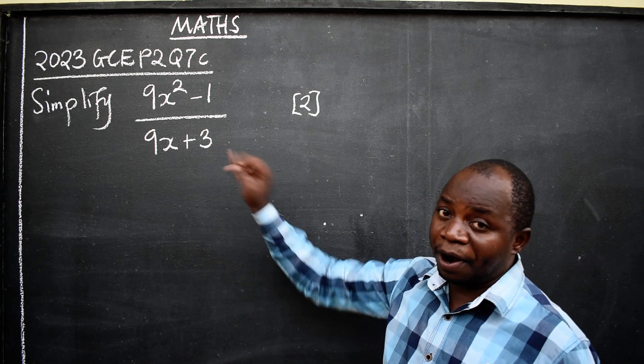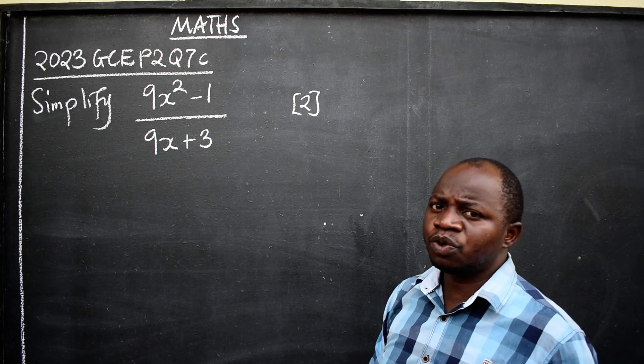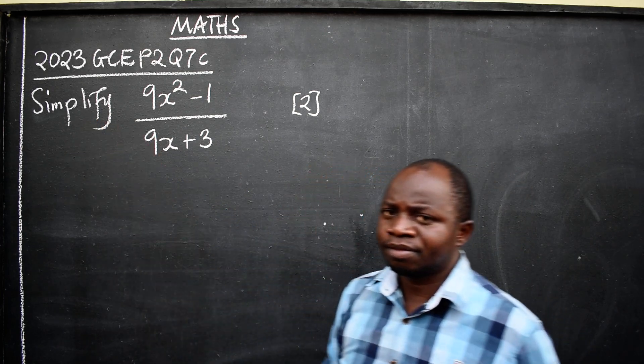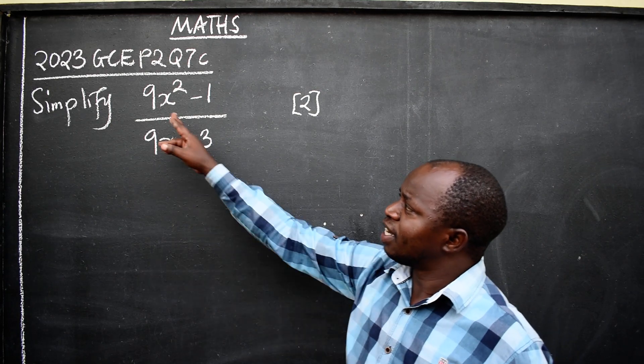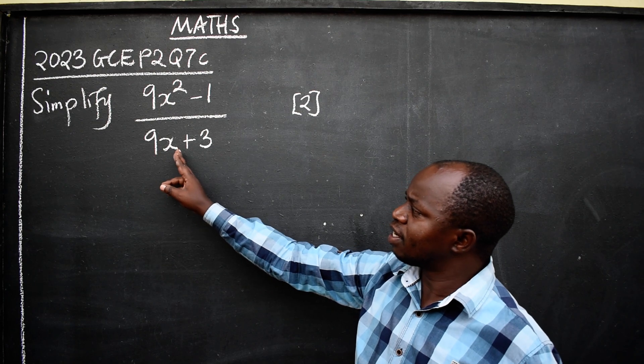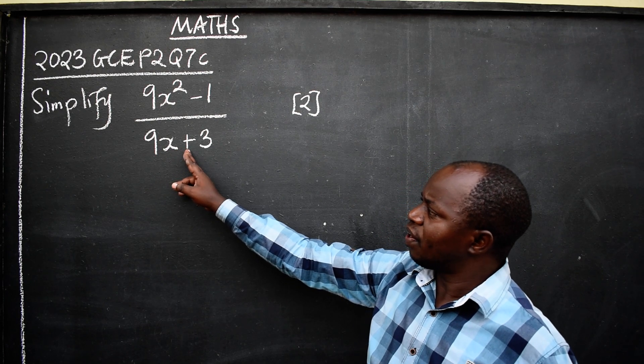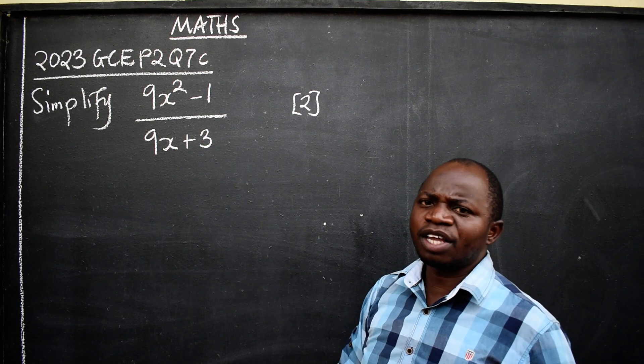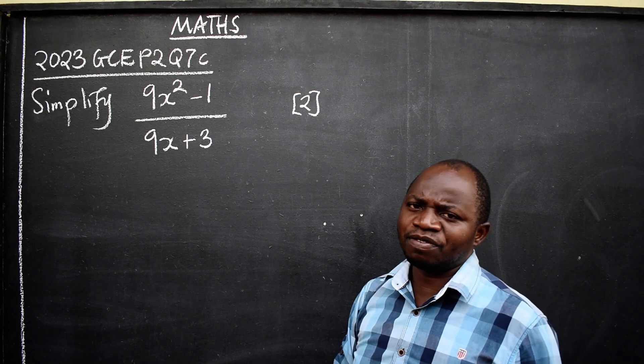Algebra. You are taught to do what? Simplify. Okay? 9x squared minus 1 divided by 9x plus 3. How can you simplify? Where do you start from?